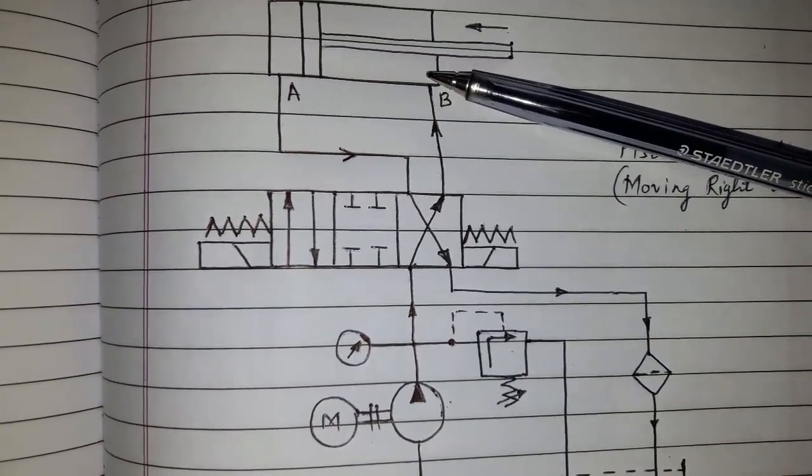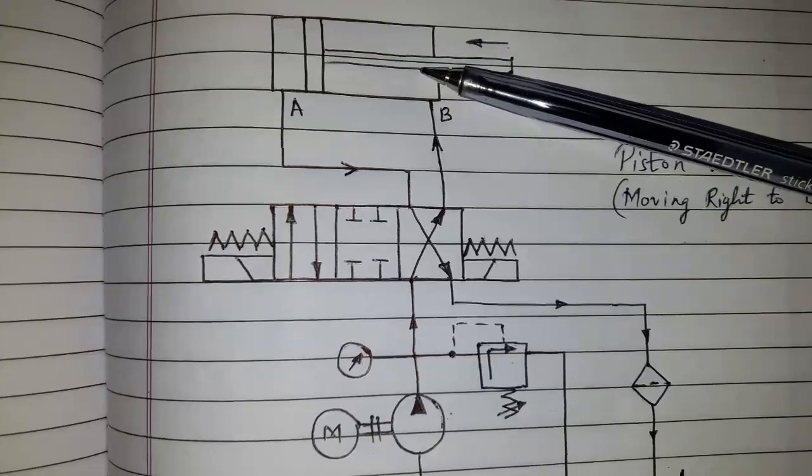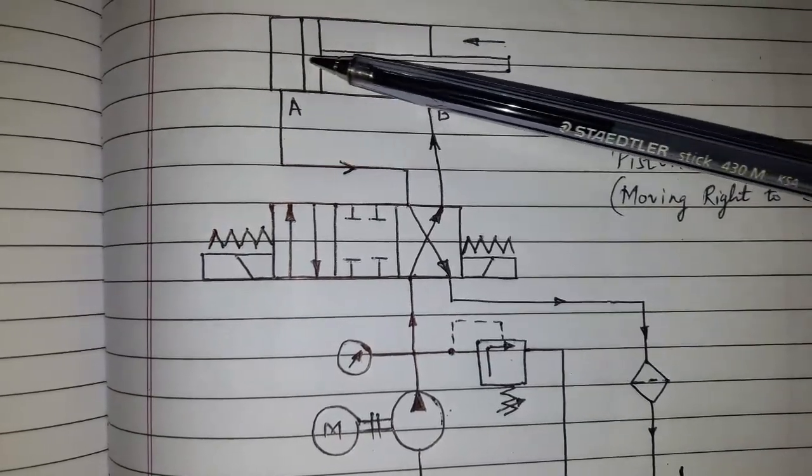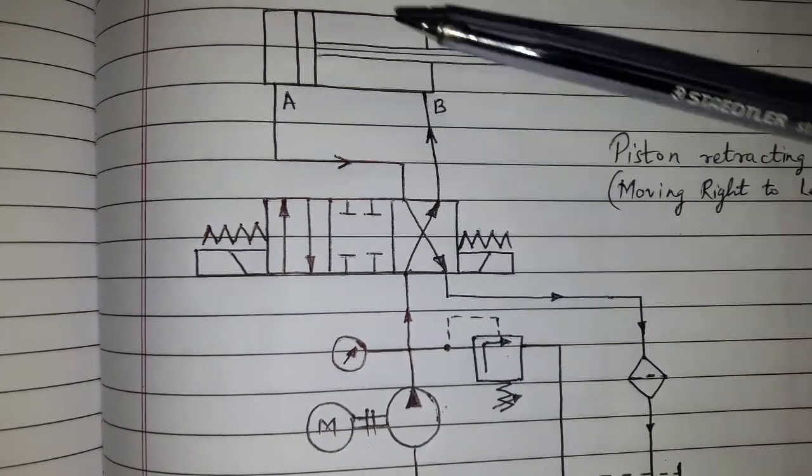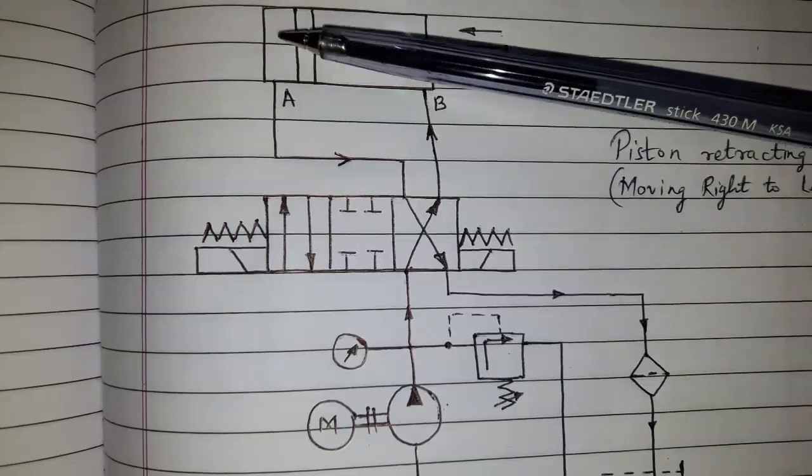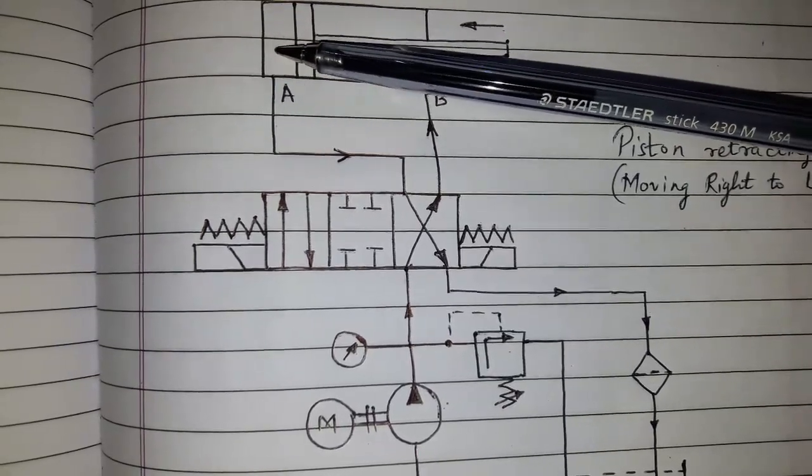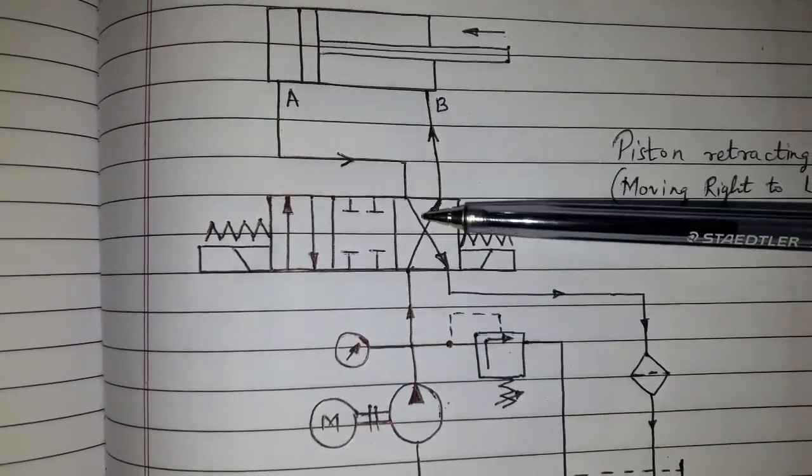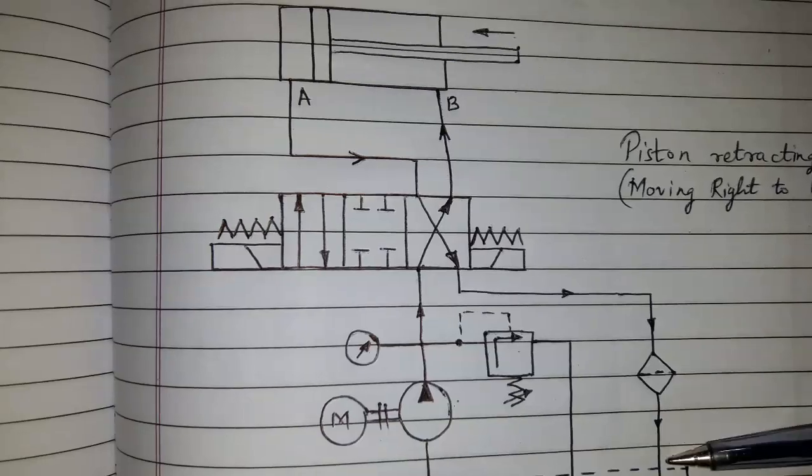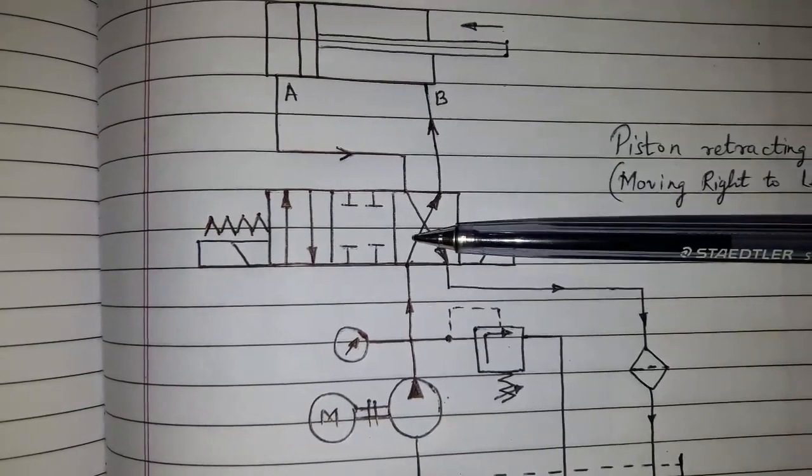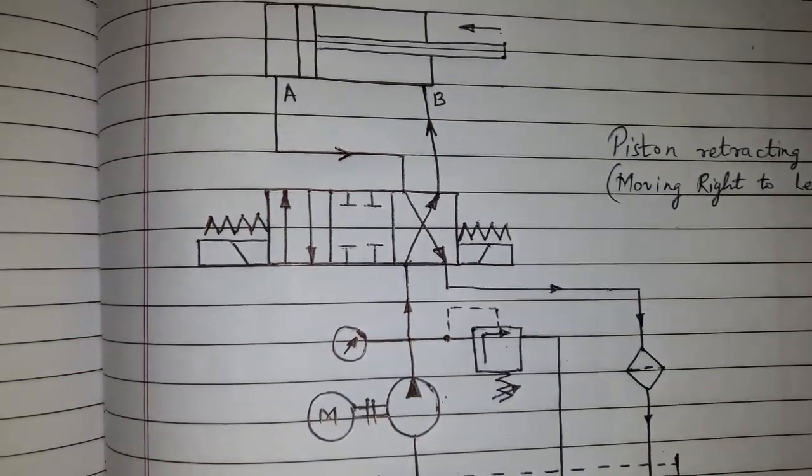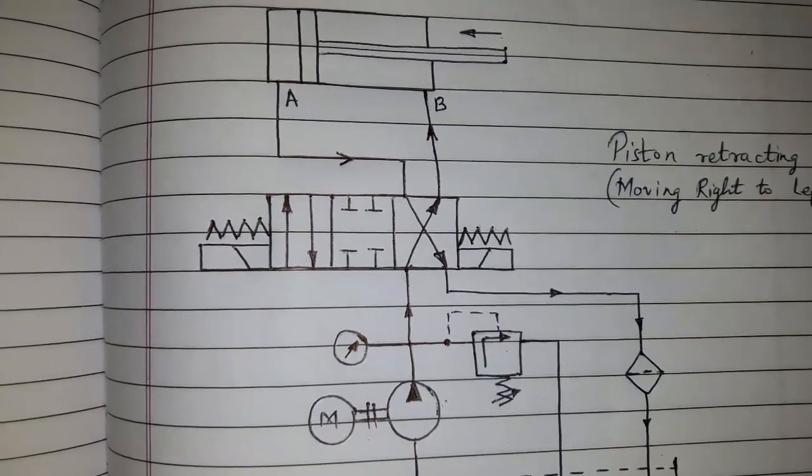Due to the pressure of oil, the piston will move from right to left. The oil on the other side of the piston will return to the oil tank via DC valve. So this was piston retracting.